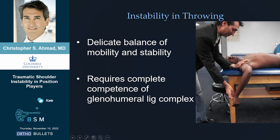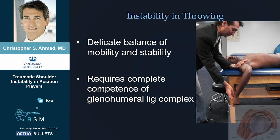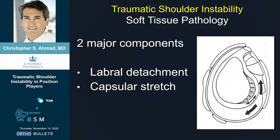Let's go over what we're trying to deal with when people injure their anterior shoulder. There's so much balance between maintaining motion so that they can throw hard, but also maintaining stability. What a dilemma — maintaining stability in the setting of this enormous range of motion. Two injuries happen: it could be a lot of capsule, a lot of labrum, or some combination of capsular stretch and labral detachment.